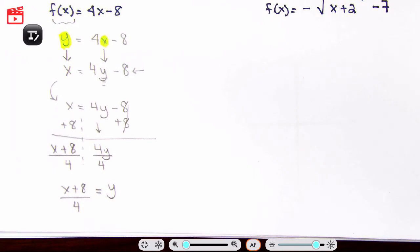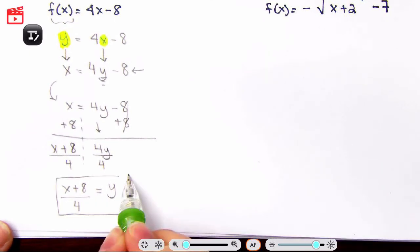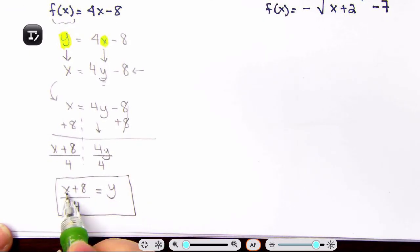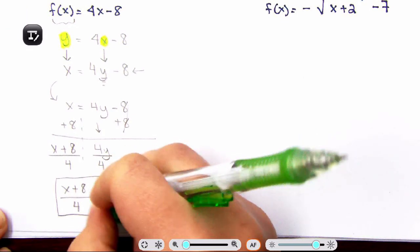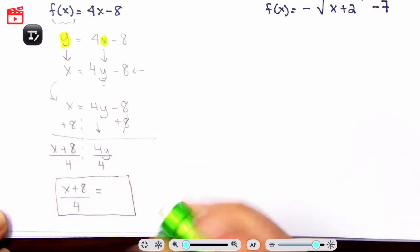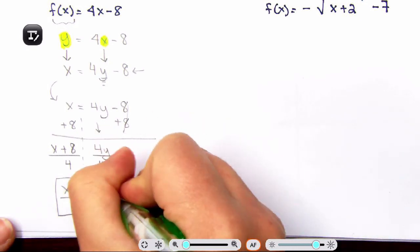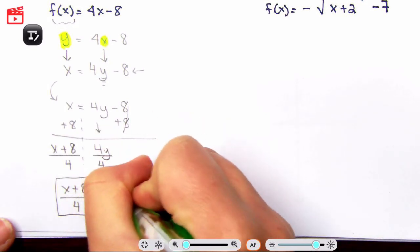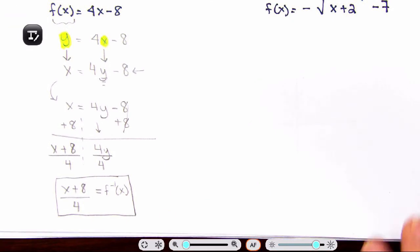So y equals x plus 8 divided by 4. You can choose to split this into two terms or keep it as one term — it's up to you. Now step four: a lot of you leave your answer as y, which would be incorrect. What we really have is the inverse function. Our objective is to find the inverse, so make sure you use inverse notation: f⁻¹(x) equals x plus 8 divided by 4.